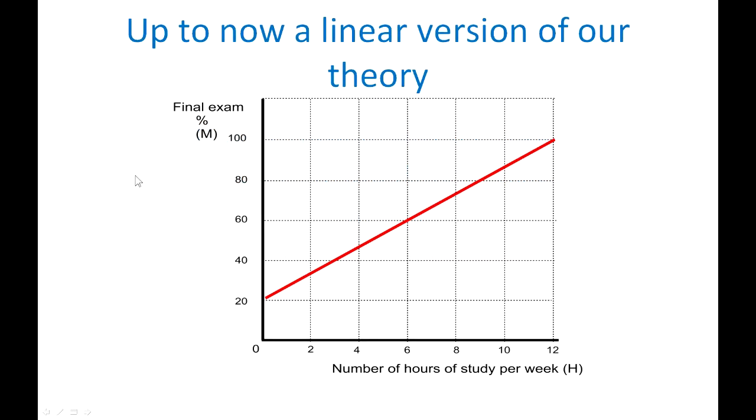In our earlier video we developed a theory which attempted to explain the level of exam scores that students can attain, and we argued that the main variable would be the number of hours of study a week having taken account of the intercept term here for other factors. But we assume them to be constant and the red linear line suggests that the greater the number of hours of study a week, the higher the exam score.